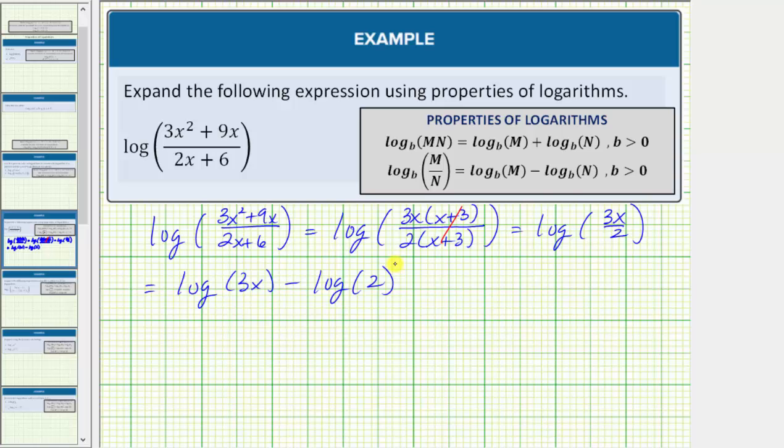And now we can expand further because we have log three x here, and three x means three times x. So because we have a log of our product, we can write this first log as a sum of two logs. Log three x equals log three plus log x, and of course we still have minus log two.